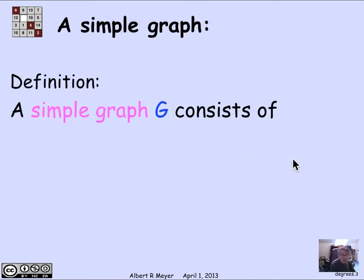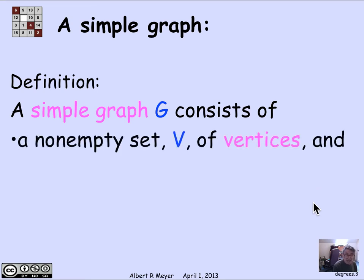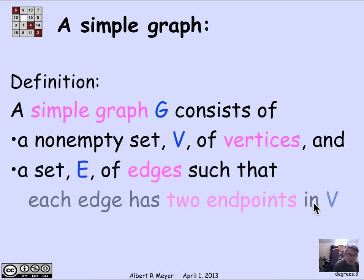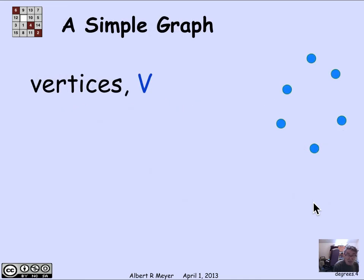So the formal definition of a simple graph is that it's an object G that has a bunch of parts. Namely, it has a non-empty set V of vertices, just like directed graphs. And it has a set E of edges. But the edges now are somewhat different, since they don't have beginnings and ends. An edge just has two endpoints that are in V, and we don't distinguish the endpoints.